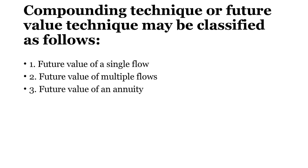The second scenario is finding the future value of multiple cash flows. In real business, cash flows occurring at different time periods are different amounts — this is known as perpetuity. In compounding technique we have a method to calculate the future value of this perpetuity. The third scenario is annuity, which means cash flows of equal amount at equal intervals of time, and for this we also have a method to find its future value.